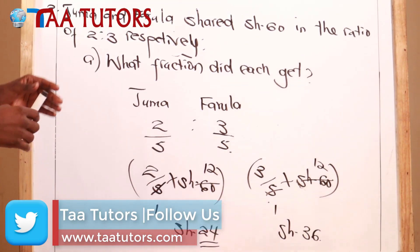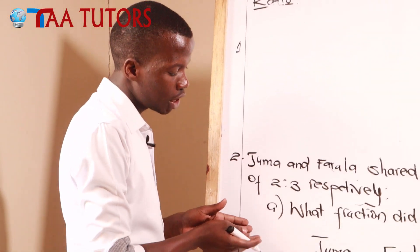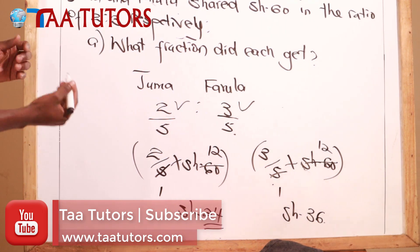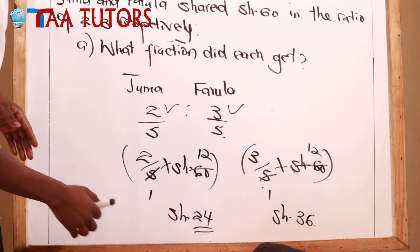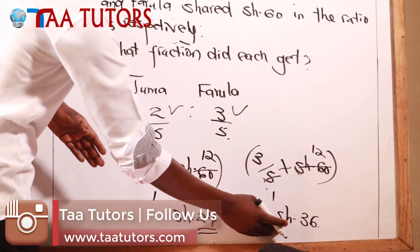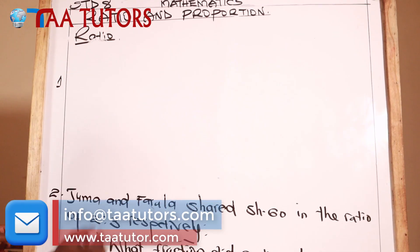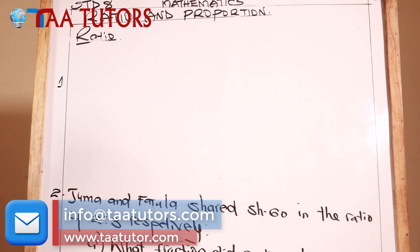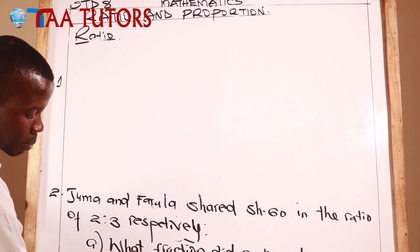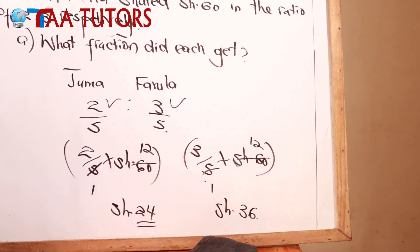Still under the same question - part (a) asked what fraction did each get: Juma got 2 over 5 and Farola got 3 over 5. Part (b) asked how much money did each get. To find how much each person got, you take their fraction and multiply by the total money shared: Juma got 24 Kenya shillings and Farola got 36 Kenya shillings.